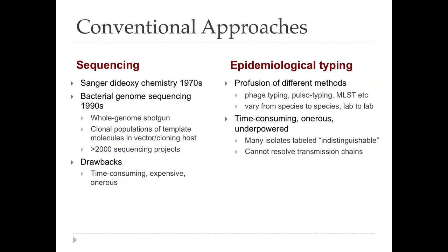When we look at conventional approaches to sequencing and epidemiological typing in bacteriology, sequencing — Sanger dideoxy sequencing — was invented in the 1970s. Bacterial genome sequencing took off in the mid-1990s using a whole genome shotgun approach, basically creating clonal populations of molecules in a biological system, propagating them in E. coli in a vector cloning host arrangement. Although we kind of look back now and sneer a little bit at that approach, it was highly successful — over 2,000 sequencing projects done using that kind of approach. But there were many drawbacks: it was time-consuming and very expensive.